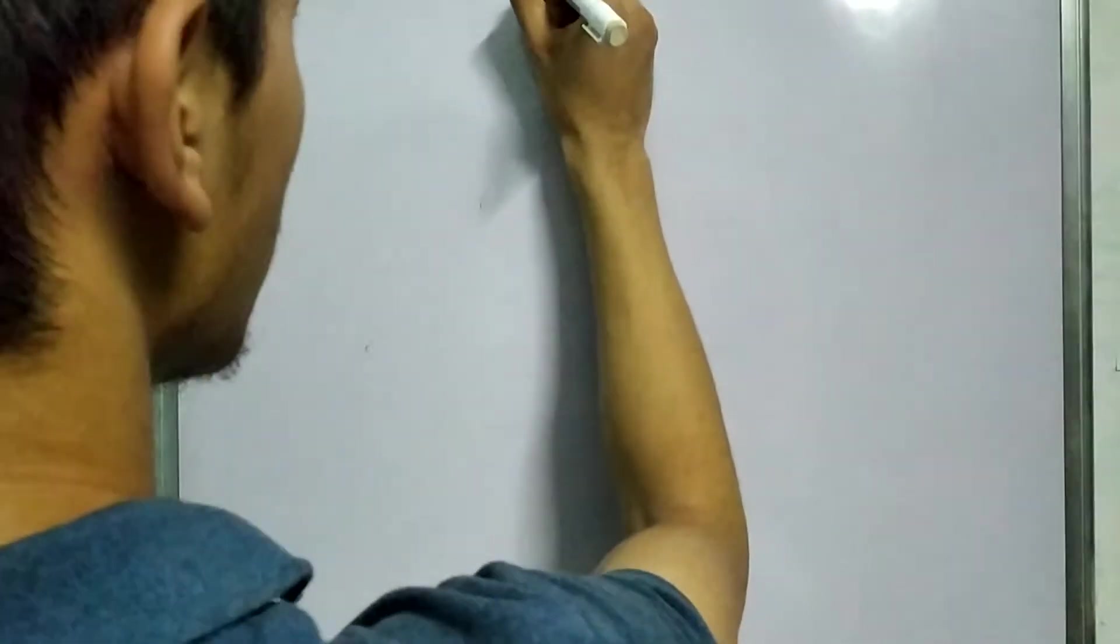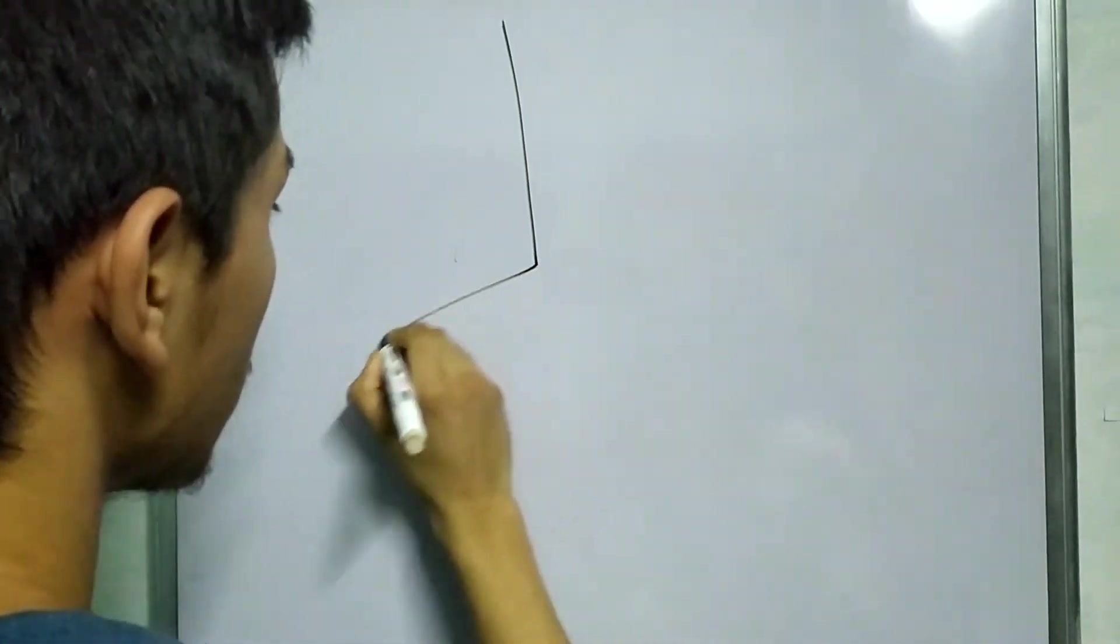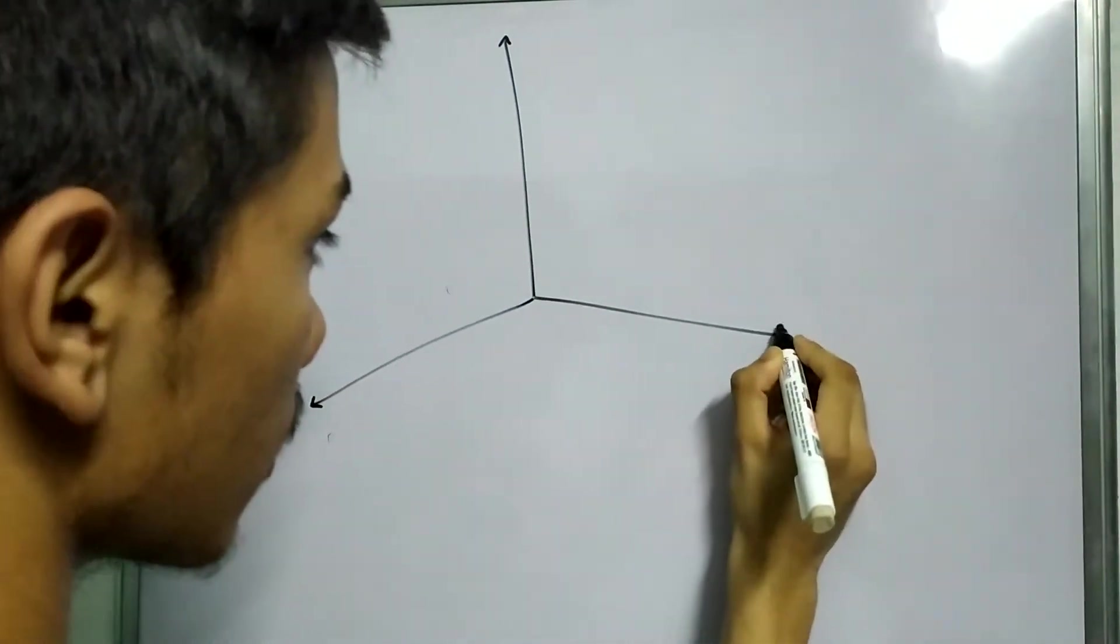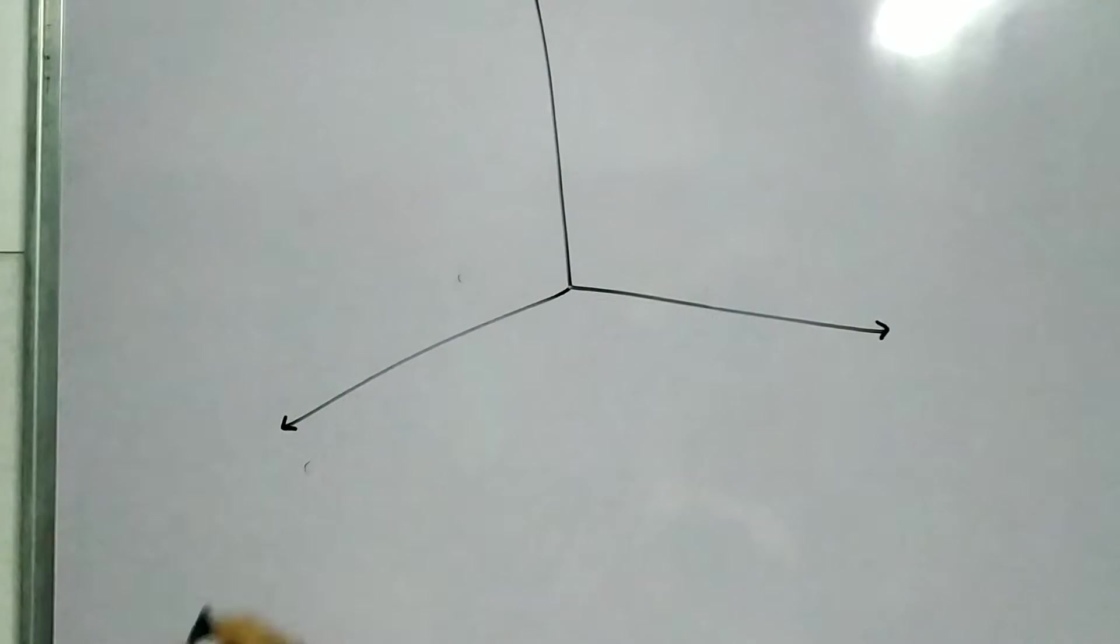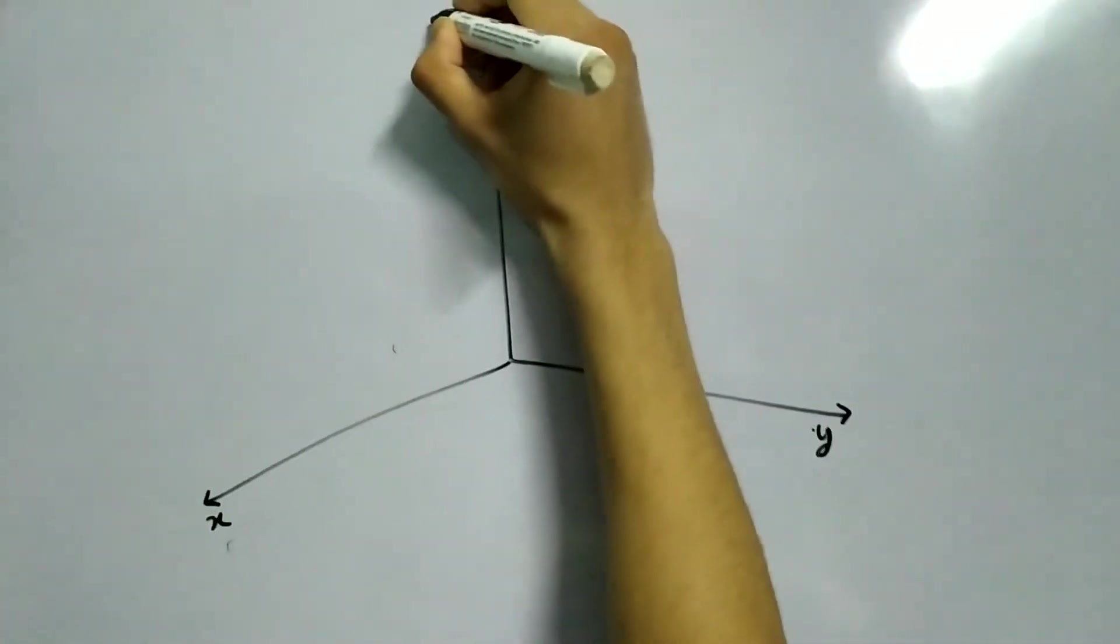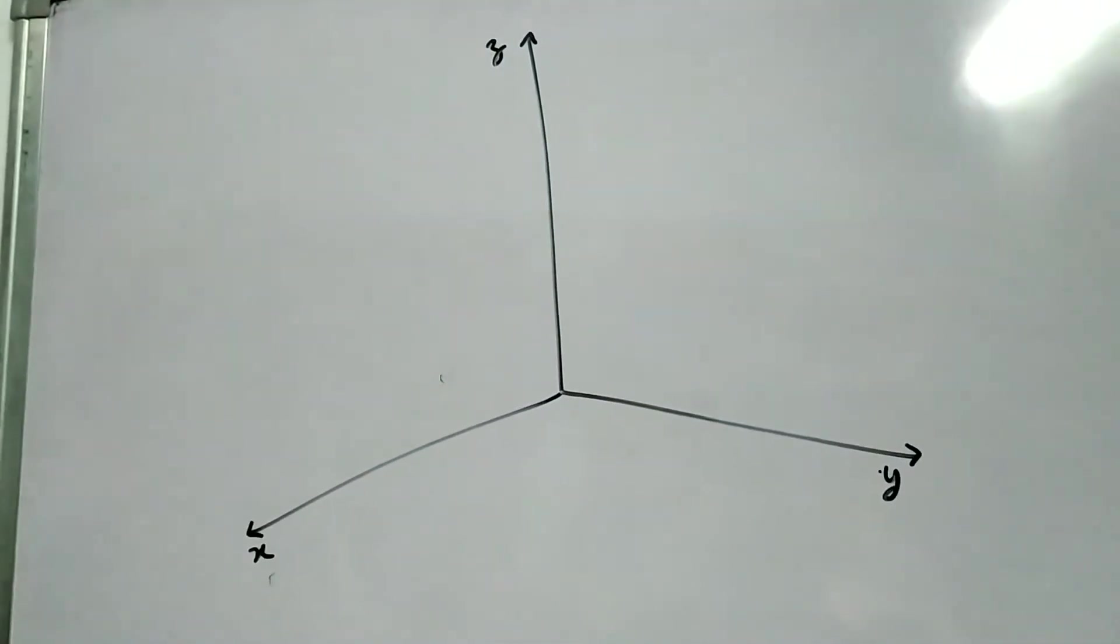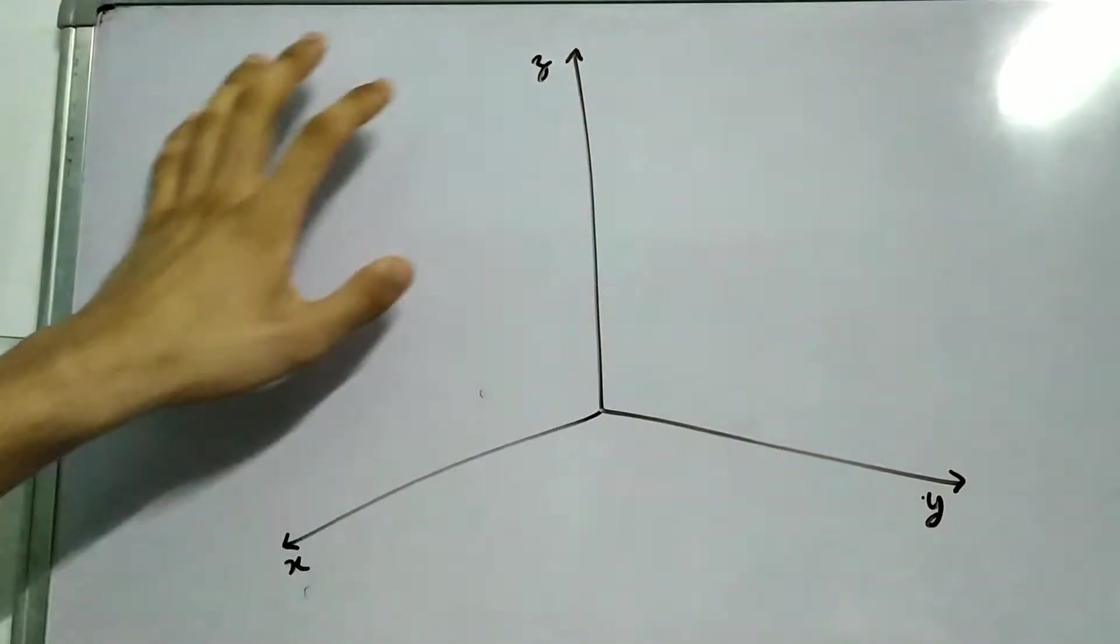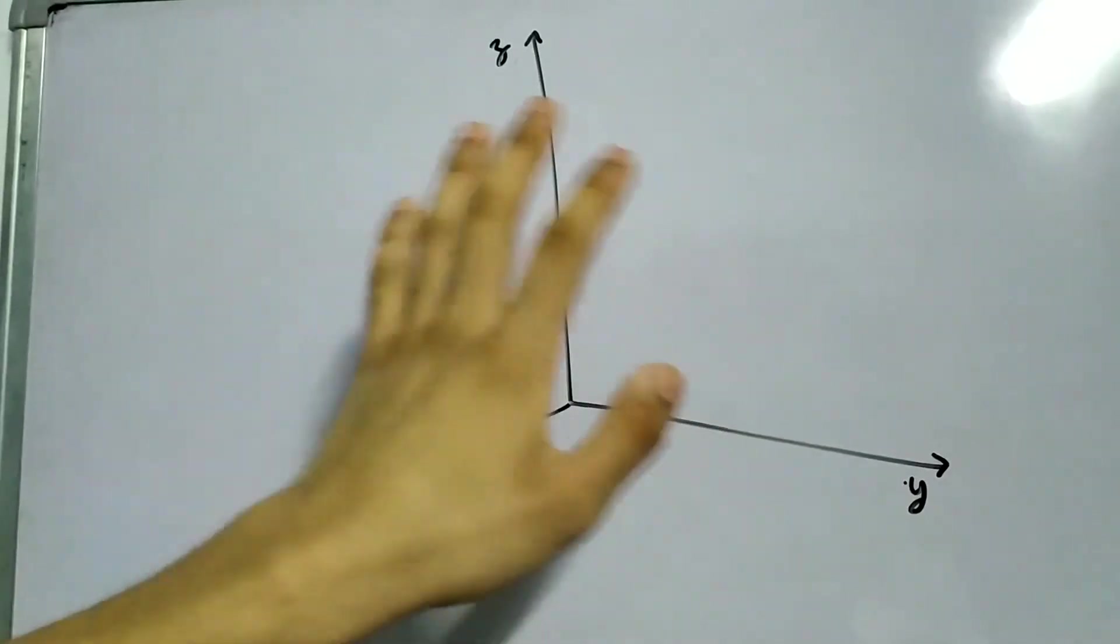Today we will be studying another type of coordinate system known as the cylindrical coordinate system. Let's see what it is. First we have our usual coordinate system in three dimensions. So this is x, this is y, this is z - you can check right hand rule. And now we will develop another coordinate system using this one.